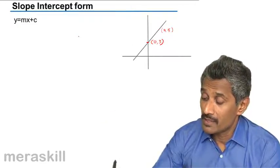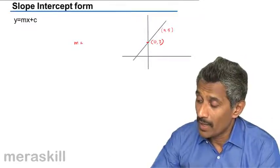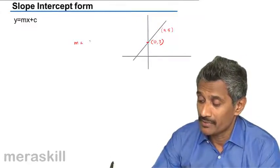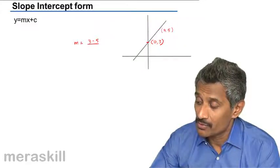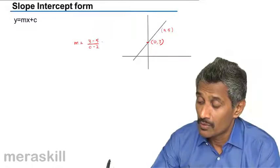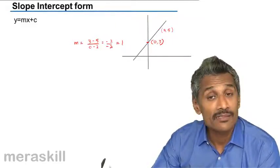Now, which means slope m is y2 minus y1, that is 3 minus 5 upon x2 minus x1, 0 minus 2, which is minus 2 upon minus 2. That is 1.